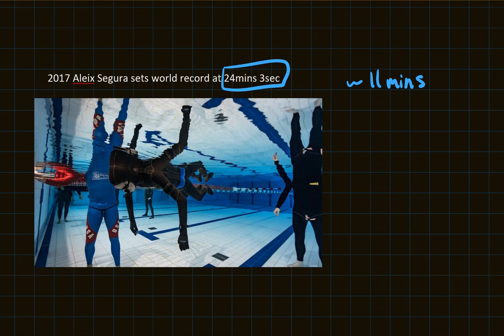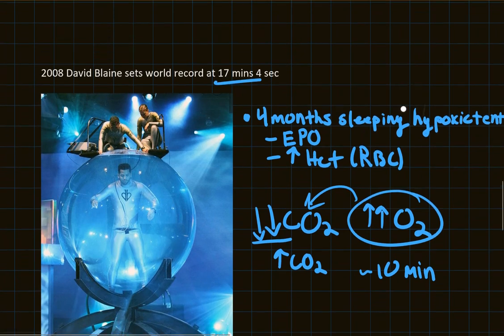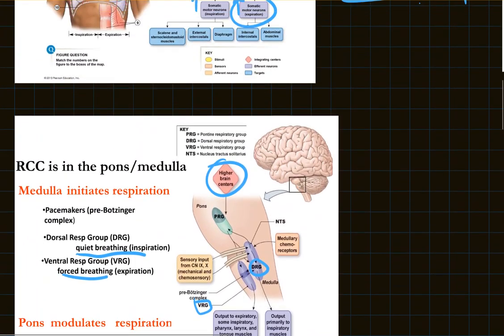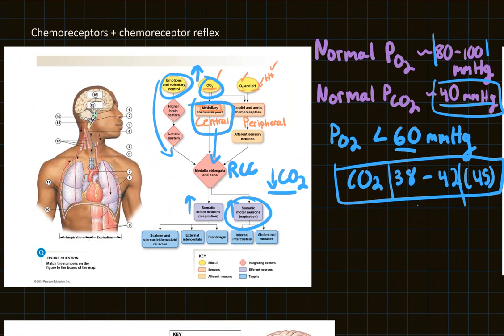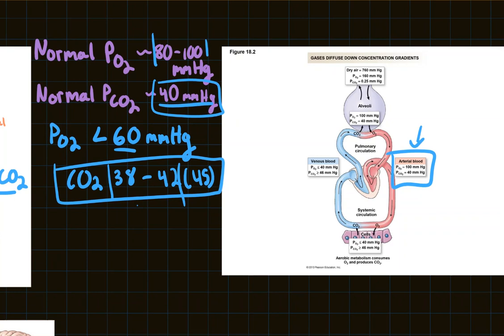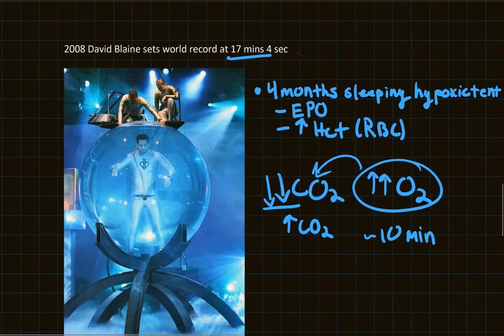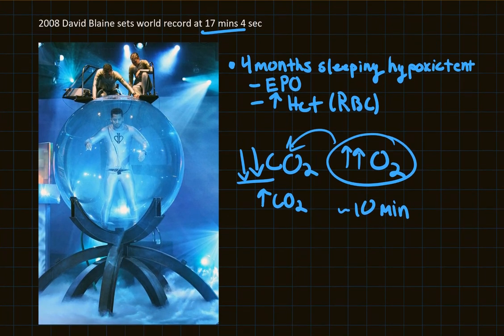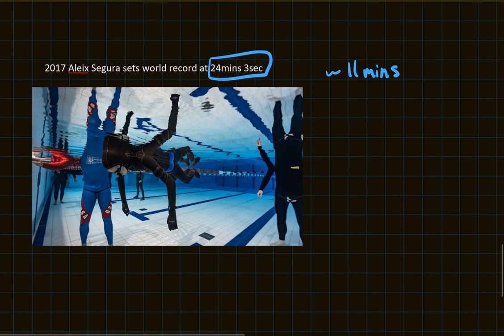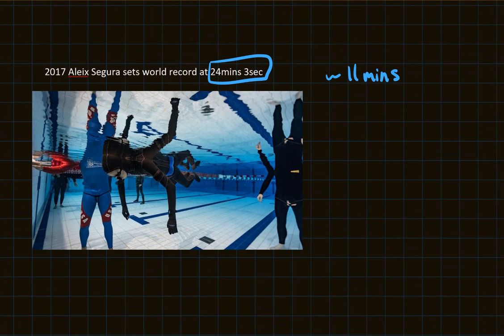We're not going to test you on David Blaine specifically, but we will test you on the chemoreceptor reflex, where the chemoreceptors are found, what they respond to, what controls respiration, and normal arterial blood gas values. That's all for today's discussion. There is a TED Talk by David Blaine on this — about 20 minutes and really interesting to listen to. I'll be releasing another video this week on respiratory pathologies.